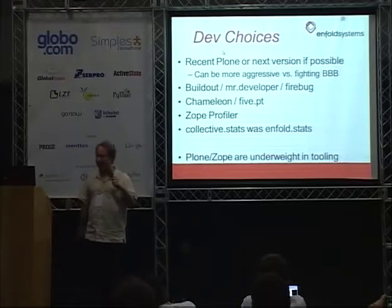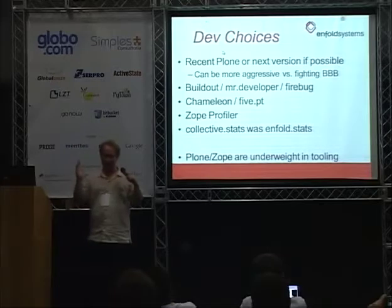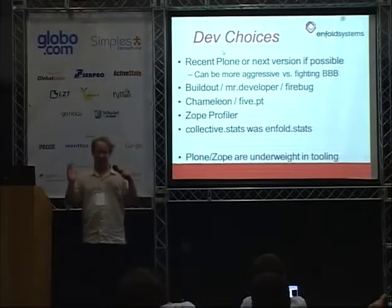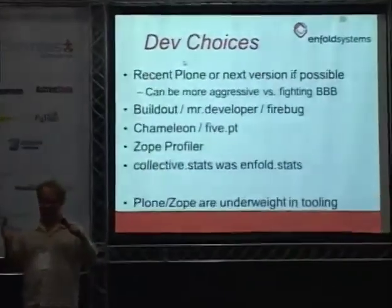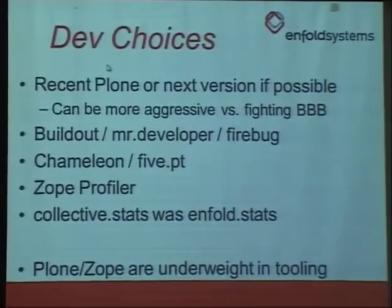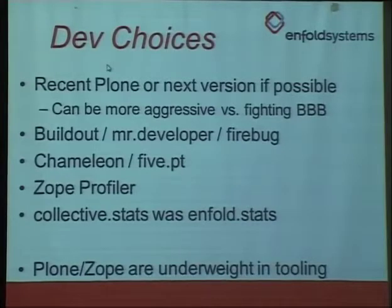Things we're talking about: buildout, Mr. Developer, Firebug, the templating engine. Using 5.pt is very important for a host of reasons — not only because it's faster, but mainly because it gets the noise out of the profiler. If you're looking at a profile with a page template, it's just noise and you cannot read it. Install 5.pt, it works, we use it on every project. Not only does your system go faster, but you have no noise inside your profiles. It's a must-do.